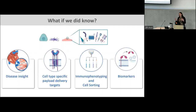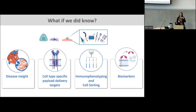Based on what we know about the importance of cell surface proteins, if we could know what proteins sit at the surface of the cell and how they change, we could learn lots of things. We could learn more about disease insight because the proteins at the surface of the cell control how a cell senses and responds to stress, to disease, to its microenvironment. We can identify new cell-type-specific drug delivery targets or payload delivery targets. We could use this information to develop reagents for research like immunophenotyping and cell sorting. And we could exploit cell surface proteins as biomarkers, since they are often shed and cleaved and can then be present in circulation.